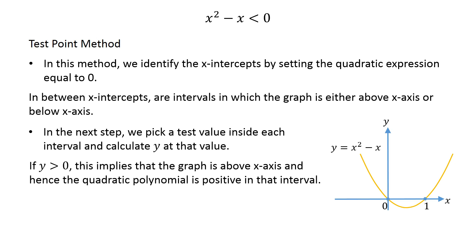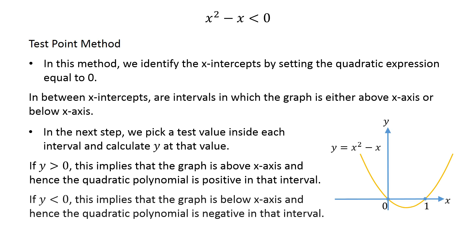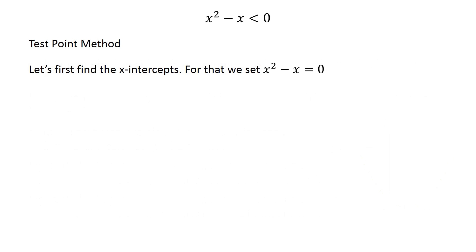If y is greater than 0, the graph is above the x-axis and hence the quadratic polynomial is positive in that interval. If y is less than 0, the graph is below the x-axis and hence the quadratic polynomial is negative in that interval. So let's first find the x-intercepts by setting x squared minus x equal to 0, giving x equals 0 or x equals 1.